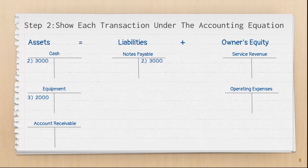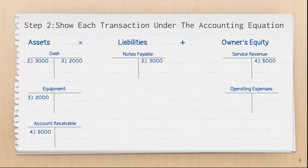In event three, Dakota purchases a lawnmower for $2,000 cash. Notice how this only affects the assets side of the equation, but still remains equal. In event four, Dakota provided $5,000 worth of services on account. Because the service is provided on account, the accounts receivable asset is debited instead of cash, and service revenue is credited.